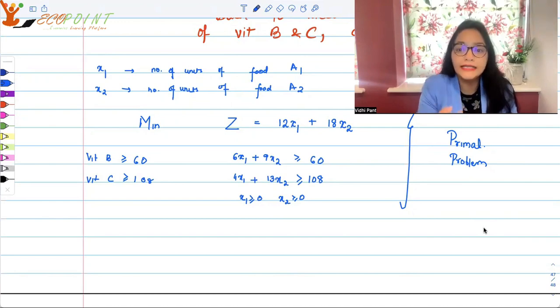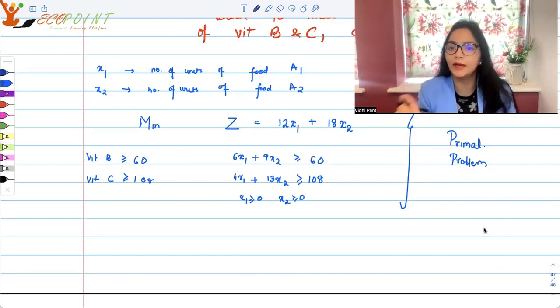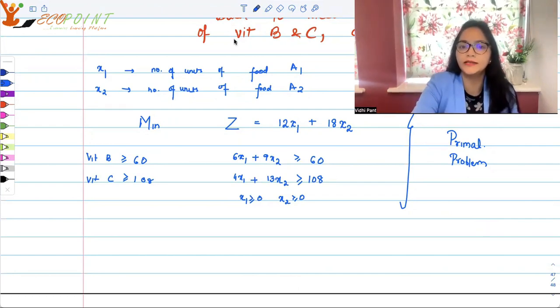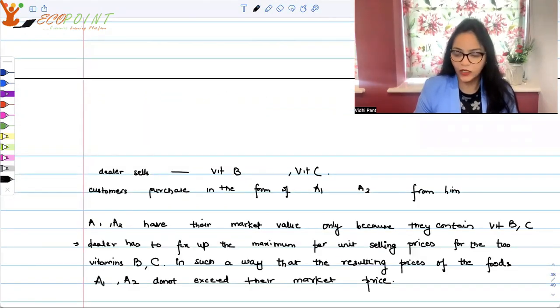Now here I am minimizing the cost. If I am thinking in opposite manner, I should be maximizing something. Let's see what I would be maximizing. Ab isko ek dealer ke hesaap se souchta hai. Suppose there is a dealer, a wholesaler, who sells vitamin B and C. Customers purchase vitamin B and C in the form of food items A1, A2. We have already discussed that, right?